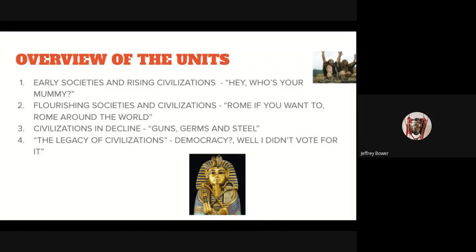Just to give you a little overview of the units: we will be starting out at the very beginning of human history with our ancestors and the very earliest man. We'll be looking at early societies as they came together and stopped living in caves and started to live together in villages and towns. And then we start to look at rising civilizations, starting in the very earliest in the Middle East, around the Tigris and the Euphrates, Mesopotamia, and Egypt.